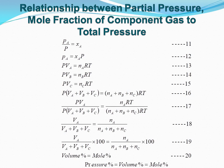Dividing the equation for component A by the total equation, we get V_A / (V_A + V_B + V_C) = N_A / (N_A + N_B + N_C). Multiplying both sides by 100 gives us that volume percent equals mole percent.